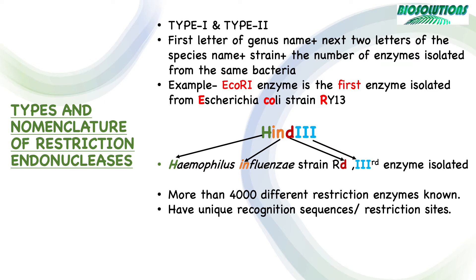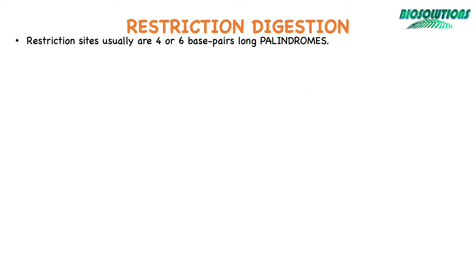There are more than 4000 restriction enzymes known to us thus far. These enzymes recognize a unique sequence of double-stranded DNA, also known as recognition site or restriction site, and cut the phosphodiester bonds on both DNA strands, thus generating a 3' OH and 5' phosphate terminals. These restriction sites are usually 4 to 6 base pairs long palindromes. What is a palindrome?